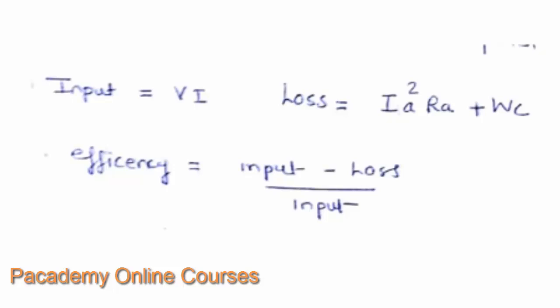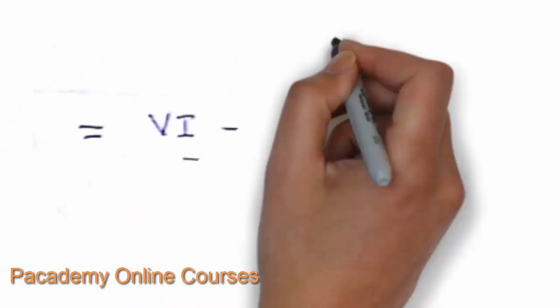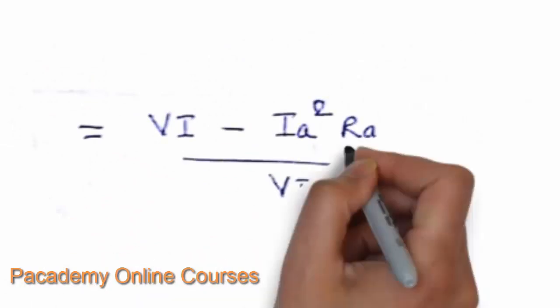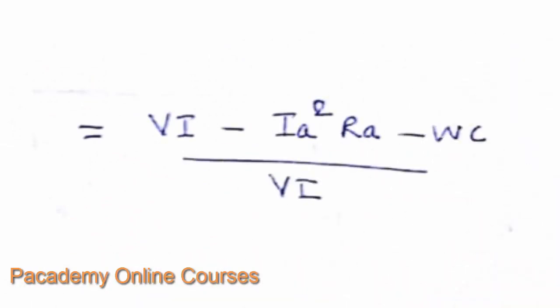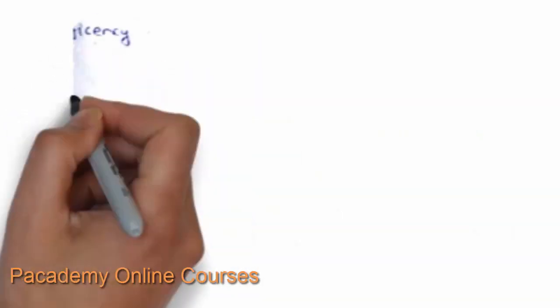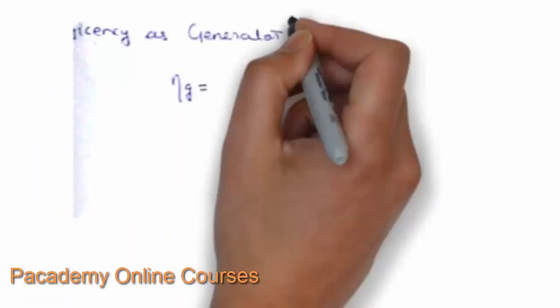This is an easy method to find the efficiency of shunt machines, performed during the testing phase before commissioning to find rated values. The motor efficiency can be written as: (V·I minus IA squared·RA minus WC) divided by V·I, where V is the supply voltage and IA is the armature current supplied to the motor.